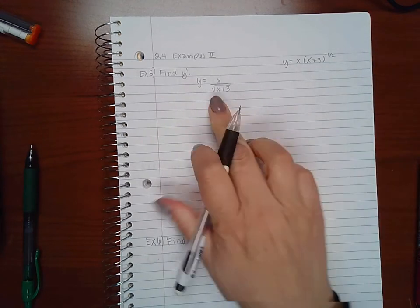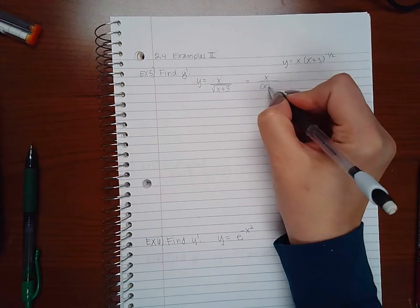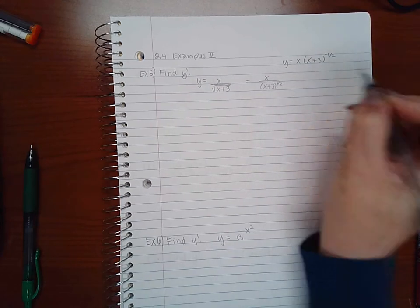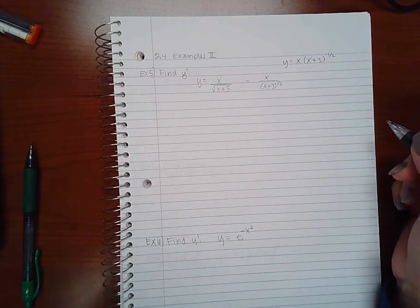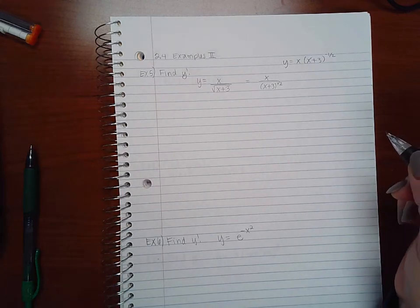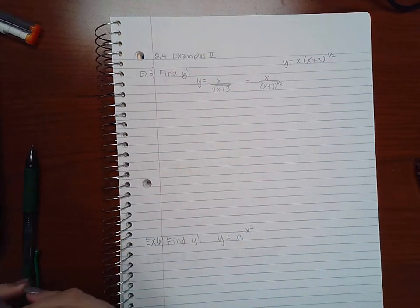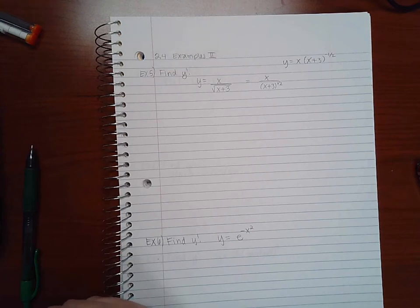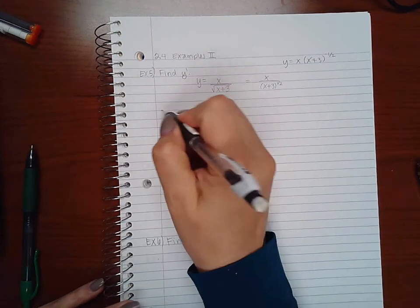Or you can keep it the way it is and just change it to (x+3) to the one half downstairs and use the quotient rule. It's up to you, either way you're going to end up with the same answer eventually. But since I need one big fat fraction in the end, I'm going to go ahead and do the quotient rule because the quotient rule will give me one big giant fraction.